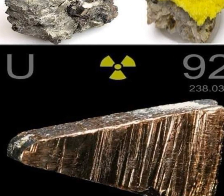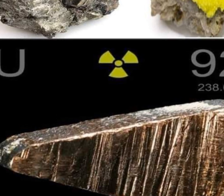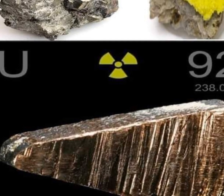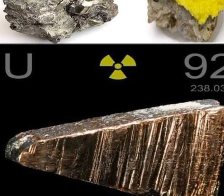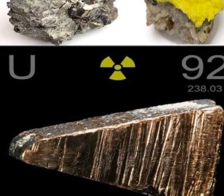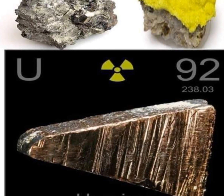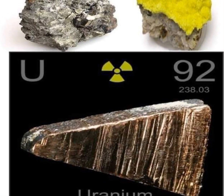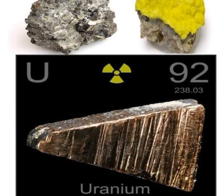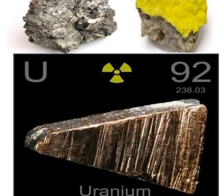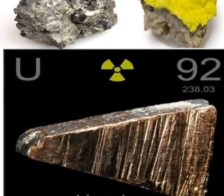Who discovered uranium? Uranium was discovered by the German chemist Martin Klaproth in 1789 AD. In the year 1896 AD, Henry Becquerel discovered the radioactive properties of uranium. Although he did not realize the importance of his discovery at first, his student Marie Curie realized the results drawn by Henry Becquerel more accurately and chose the name radioactivity for this new phenomenon.